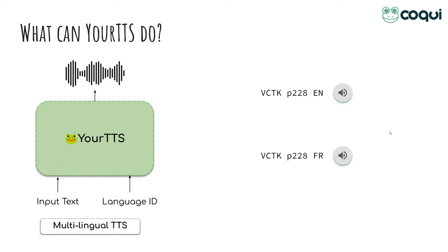Following the same principles, multilingual synthesis is learned by providing and training multiple languages to the model with their associated language IDs. Here's how a single speaker sounds in two different languages — here, English and French. [Audio demo: 'When the sunlight strikes raindrops in the air, they act as a prism and form a rainbow.' — in English, then French.]